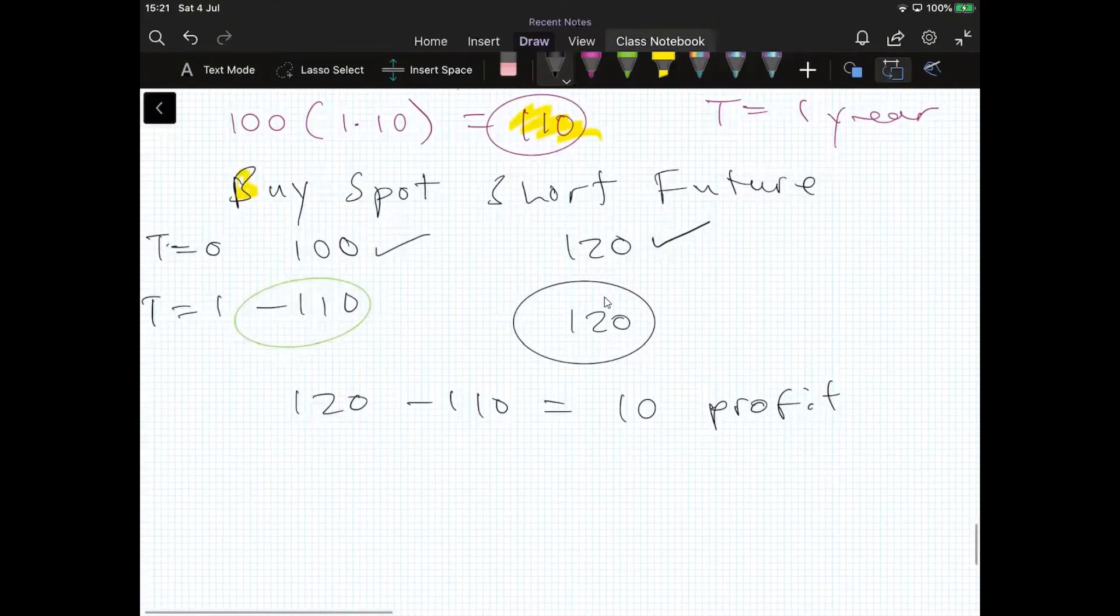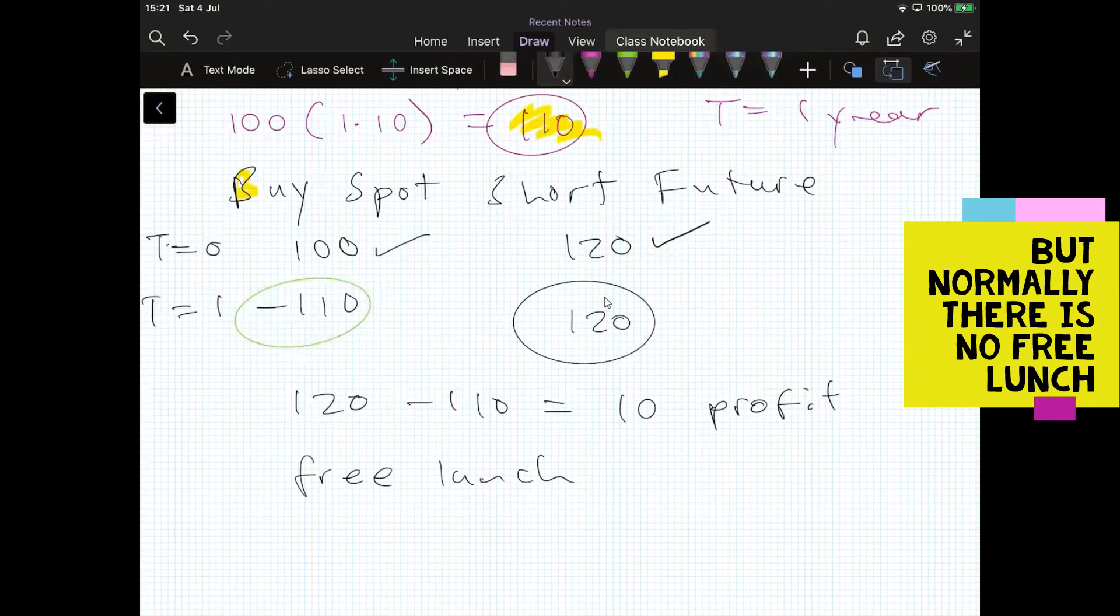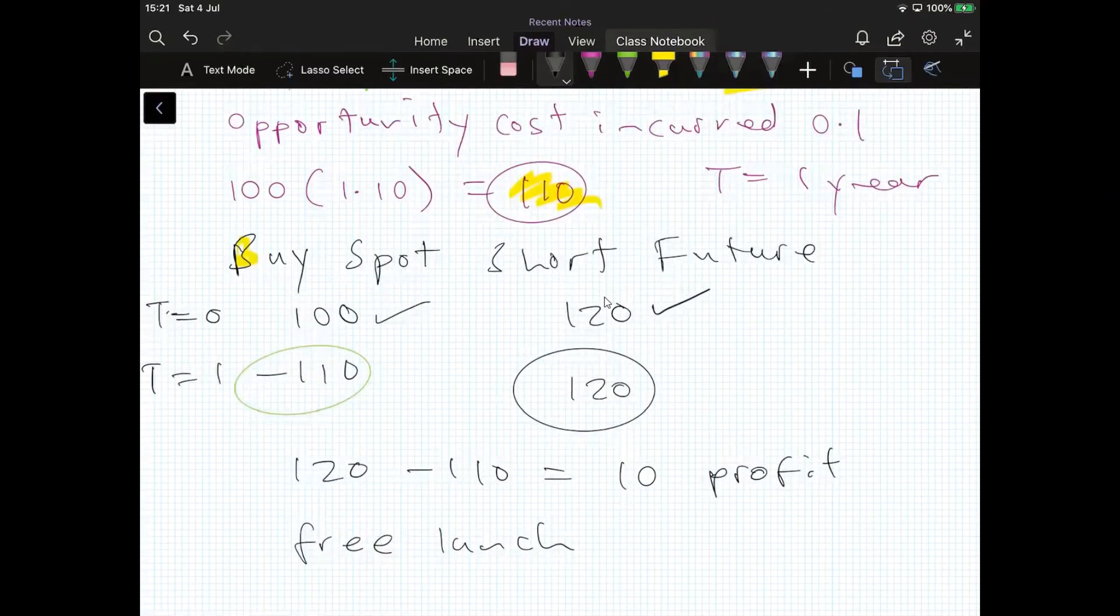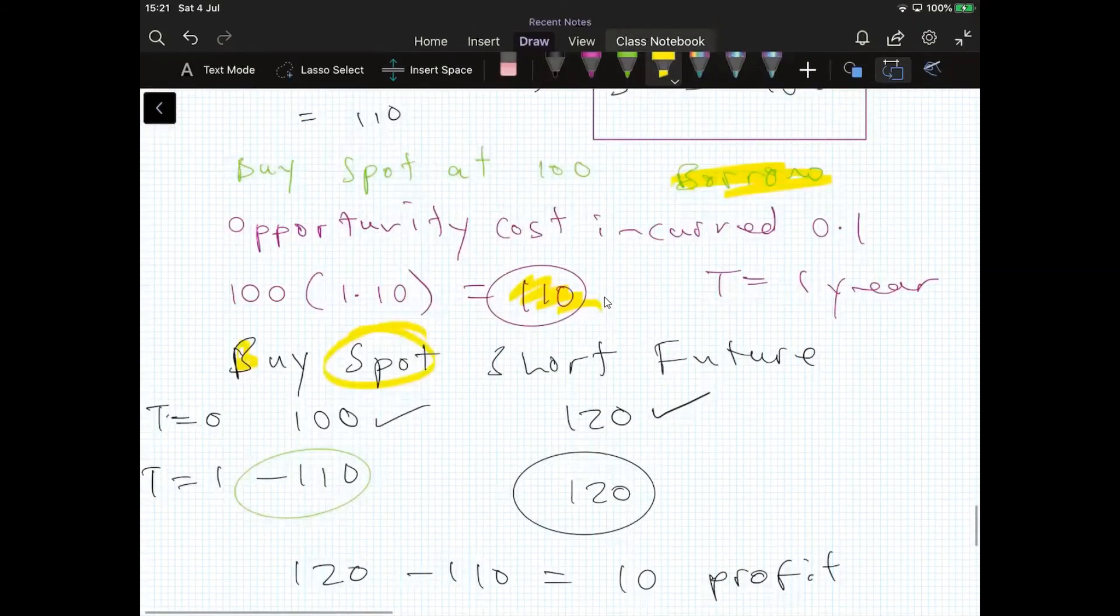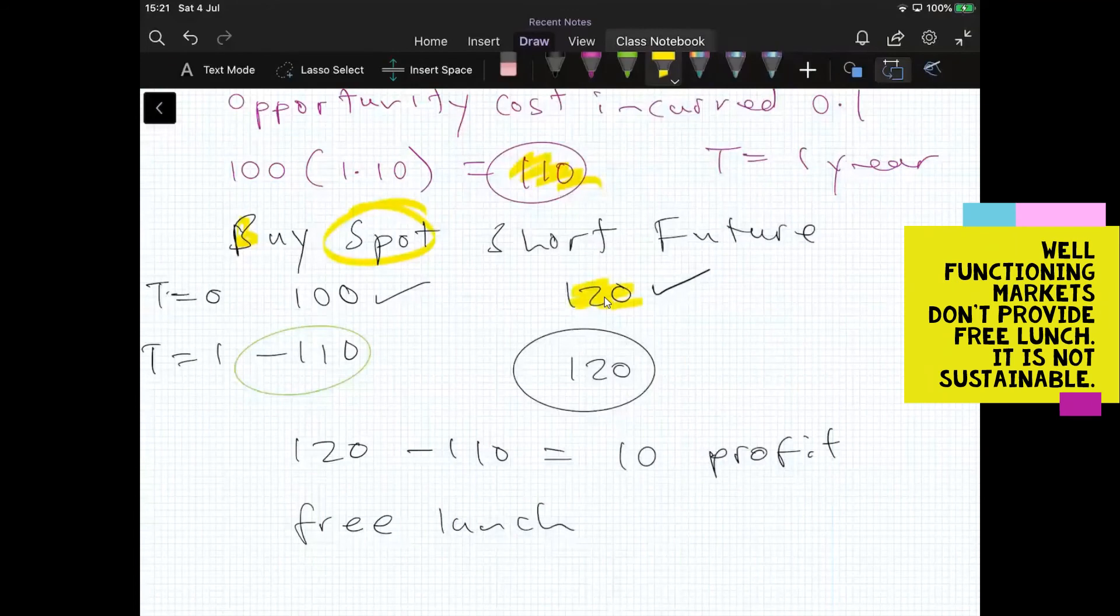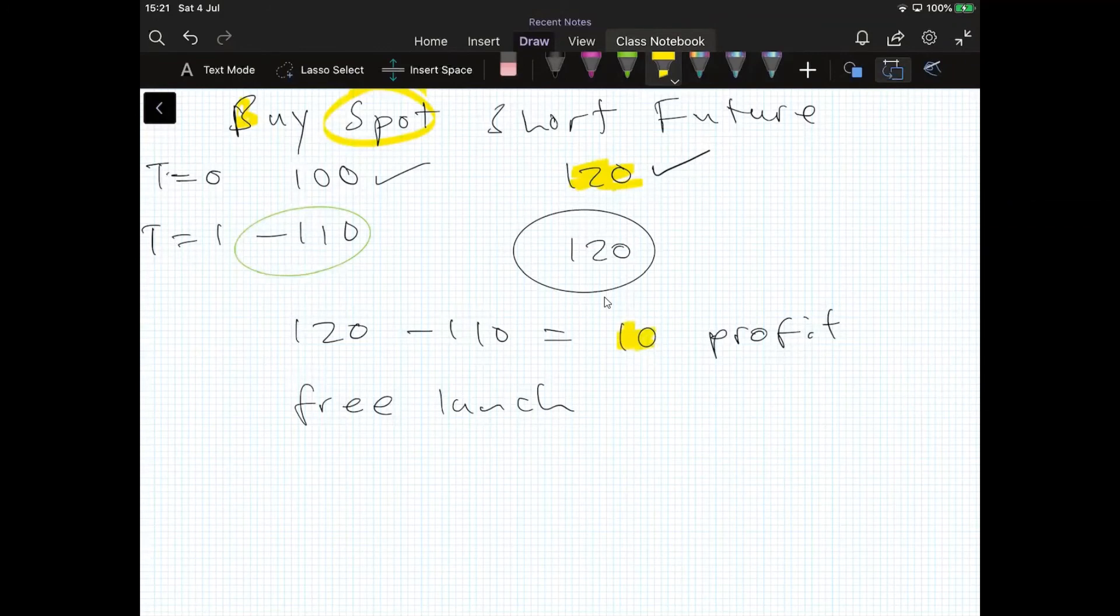This is what we might refer to as a free lunch. Purely by spotting the mispricing in the market, the relatively low spot price compared to the futures price being $120, we were able to generate a profit of $10. It's worth noting this is a risk-free profit. So the free lunch is not just a profit, it's even better, it's a risk-free profit. And that would not be sustainable.